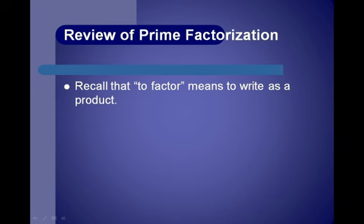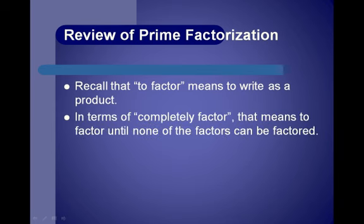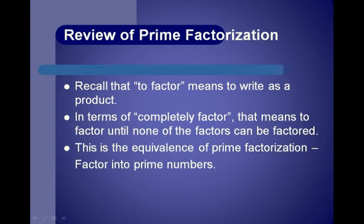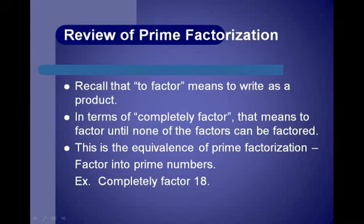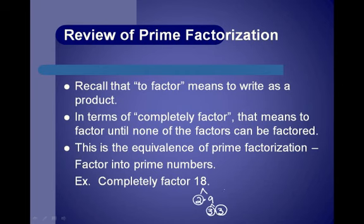Recall that to factor means to write as a product. To completely factor means to factor until none of the factors can be factored further. This is the equivalent of prime factorization like we did with real numbers. For example, to completely factor 18, we find 2 times 9. Since 2 is prime and 9 equals 3 times 3, our factored form is 2 times 3 times 3, or 2 times 3 squared.